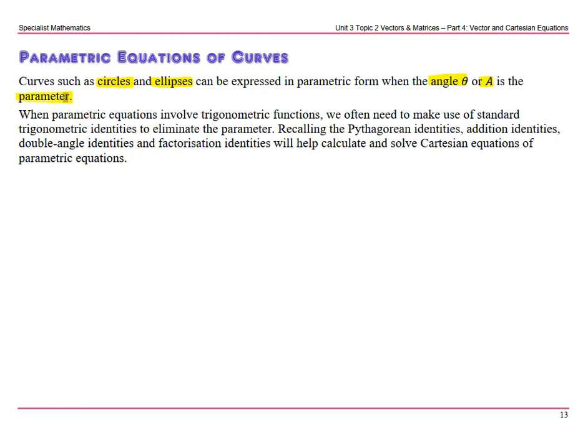Now when parametric equations involve trigonometric functions, we often need to make use of standard trigonometric identities to eliminate the parameter. So you're going to have to recall Pythagorean identities, addition identities, double-angle identities and factorization identities so you can calculate and solve Cartesian equations of parametric equations. Now we are going to cover more of these next week, this is just an introduction now.